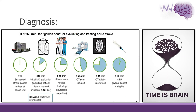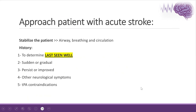We have what we call a golden hour for evaluating and treating patients with acute stroke. At the time we are suspecting a patient with a focal neurological deficit, this is zero time. From zero time until less than 10 minutes, we should evaluate the patient including history and lab work. In less than 15 minutes, the stroke team should be notified. In less than 25 minutes, CT scan should be initiated. In less than 45 minutes, CT and labs should be interpreted. In less than 60 minutes, the patient, if eligible, should have the TPA, because always we say time is brain.